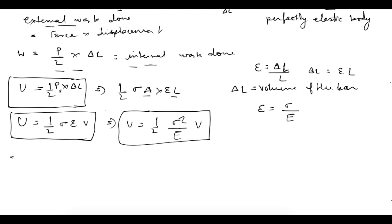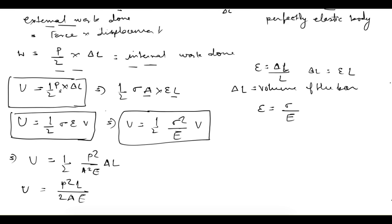One last form: we can write stress as P/A, so U equals half times P squared over A squared times E, and the volume is A times L. From here, U equals P squared L over 2AE. So these are the various forms of the strain energy equation.